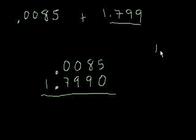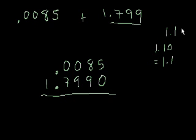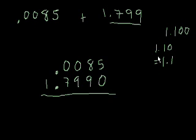If I said 1.10, that's the same thing as 1.1, which is the same thing as 1.100 — it's all 1 and 1 tenth. These zeros just add extra digits of precision without changing the actual value. So I added this 0 here, and you can always do that. You can add trailing zeros without changing the value of the number. And now we're really ready to add.